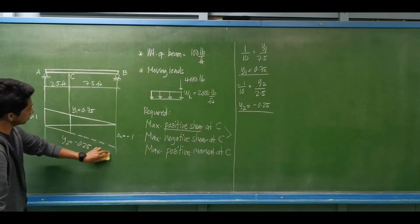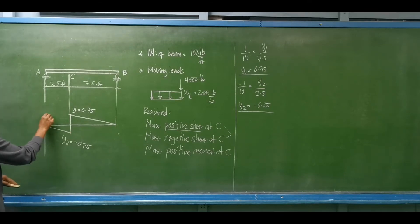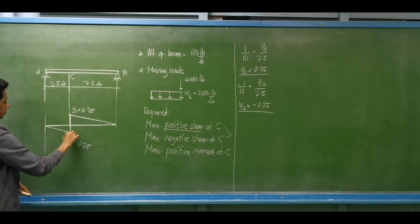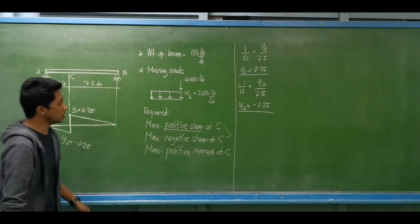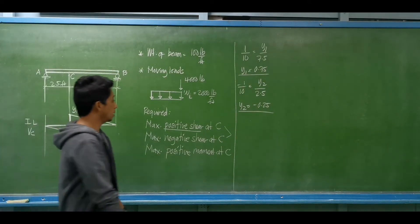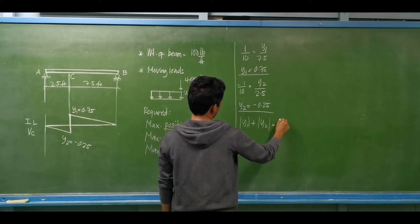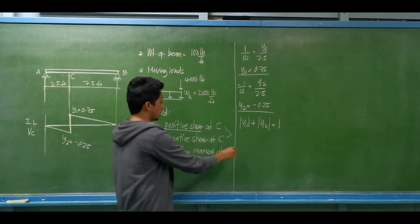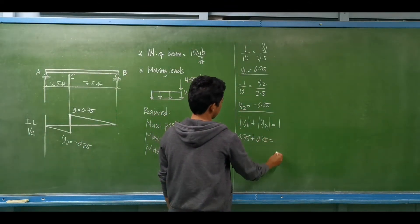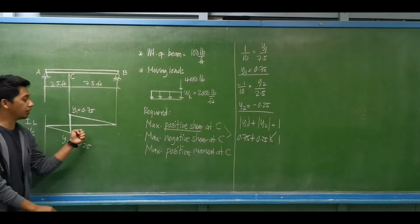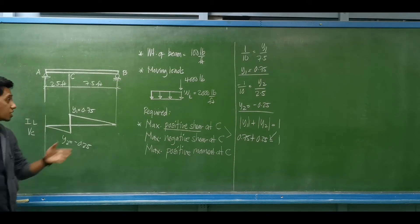These are the peak ordinates for the shear at C. This is the influence line for shear at C. Notice that the absolute value of Y sub 1 plus the absolute value of Y sub 2 always equals 1: 0.75 + 0.25 = 1. We now have the ordinates and are ready to compute the maximum positive shear at C.